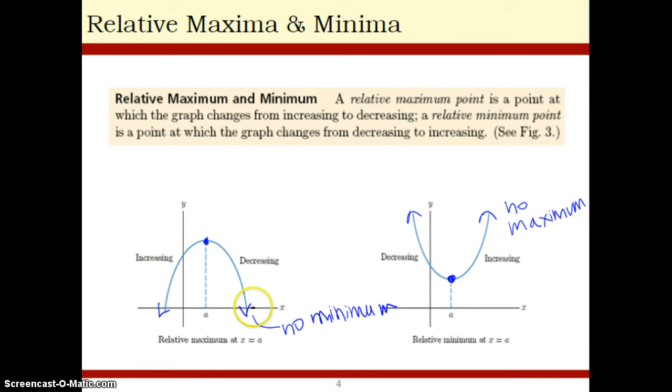This graph has no maximum because in this case, the minimum is negative infinity, which is not a number. In this case, the maximum would be positive infinity, again, which is not a number. So this first graph only has a maximum; the second graph only has a minimum.